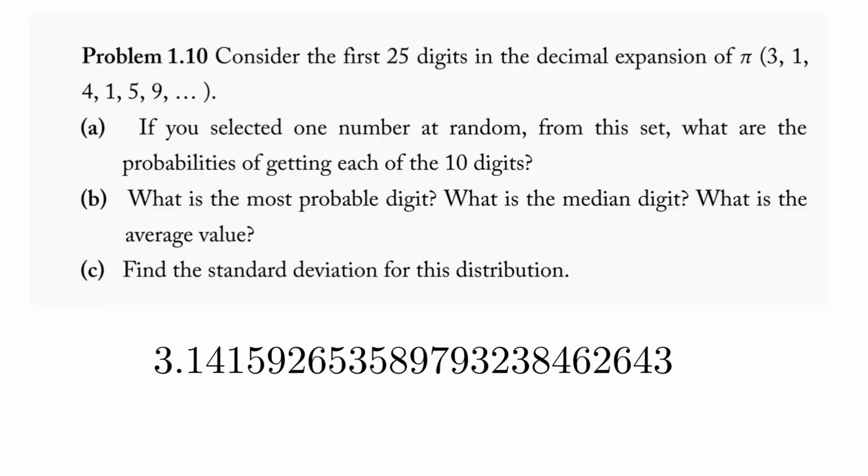In this video we will be taking a look at problem 1.10 from Griffith's Introduction to Quantum Mechanics 3rd Edition. This problem tells us to consider the first 25 digits of pi, so 3.14159265 and so on.